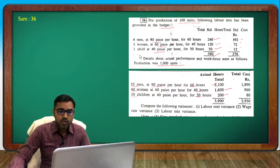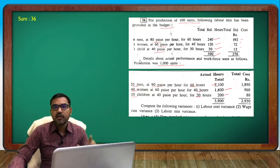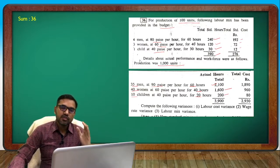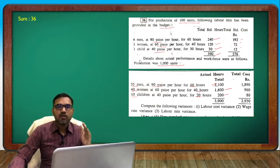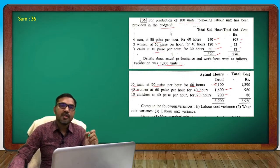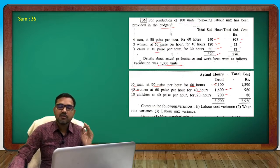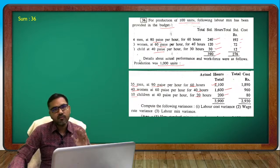The numbers are 2400, 1200, 300 — the ratio is 24:12:3. If we cancel it, we get 8:4:1. This is the standard ratio.